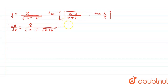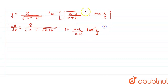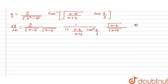Now, differentiation of tan inverse x is 1 upon 1 plus x square. So, differentiation of tan inverse of this term will become 1 upon 1 plus a minus b upon a plus b into tan square of x by 2, into — now differentiation of the term inside tan inverse. This is constant, so it will remain as square root of a minus b upon square root of a plus b, into differentiation of tan(x/2) which is sec²(x/2) into 1 upon 2.